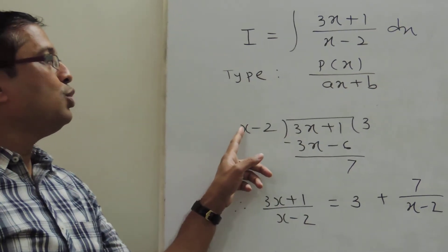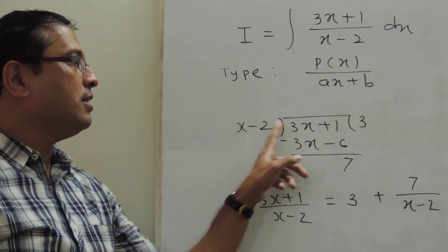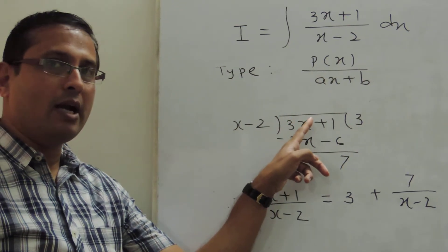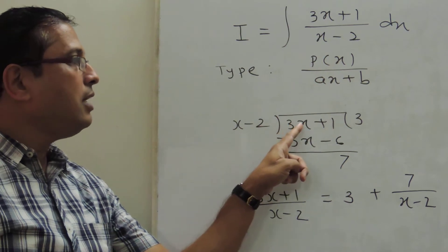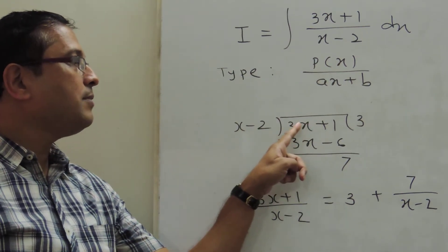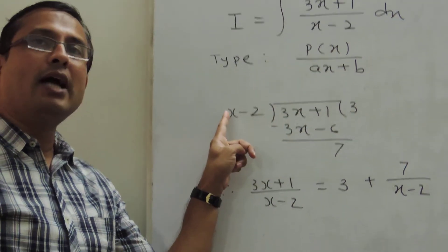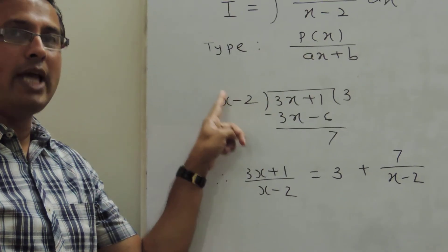x minus 2 is called the divisor. 3x plus 1 is the dividend. Now highest degree term in the dividend is 3x, so we divide it by the highest degree term in the divisor which is x.